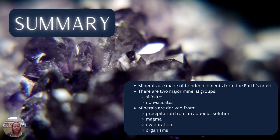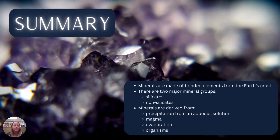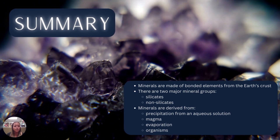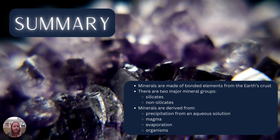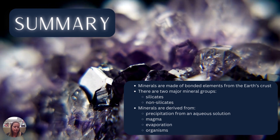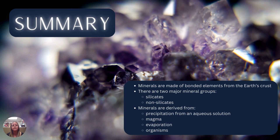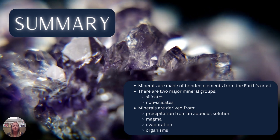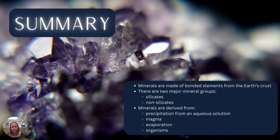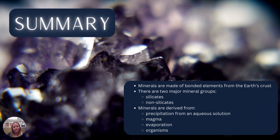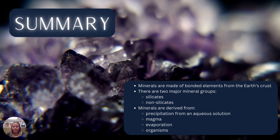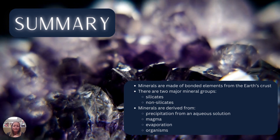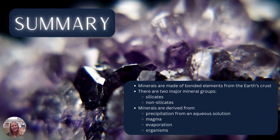To summarize: minerals are made up of bonded elements from the Earth's crust. They can bond with covalent bonding or ionic bonding, with covalent being the stronger bond. There are two main mineral groups — the silicates and the non-silicates — and minerals are derived from precipitation of aqueous solution or evaporation, magma, and organisms. I'll meet you in the next video, which is on the physical properties of minerals. See you then!